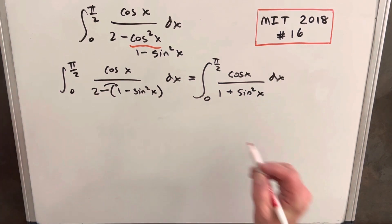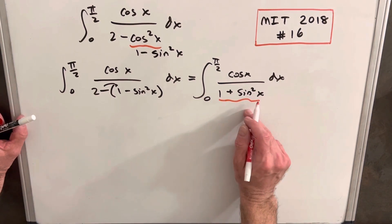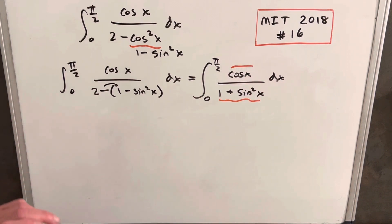And the beauty of that is when we have sine in the denominator and cosine in the numerator, we can do a u substitution.